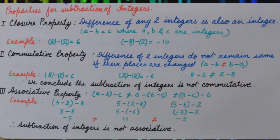So it means the answer is not same. Therefore, difference of two integers do not remain same if their places are interchanged. Symbolic form A minus B is not equal to B minus A. Therefore, we conclude the subtraction of integers is not commutative.